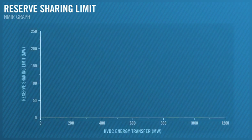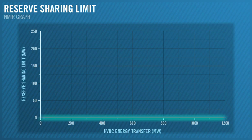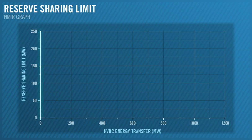The reserve shearing limit is the maximum amount of fur and sur that can be transferred from one island to the other. This graph will show the relationship between the amount of energy transferred across the HVDC along the x-axis and the reserve shearing limit along the y-axis.